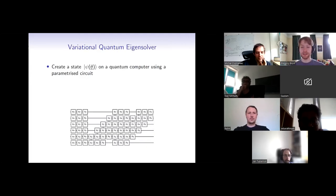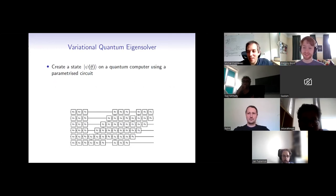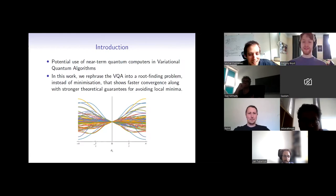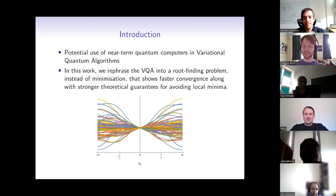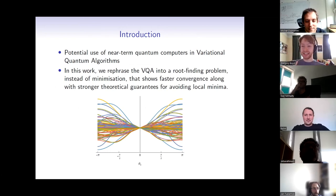In this talk, I'm going to rephrase the variational quantum algorithm into a root finding problem rather than an energy minimization problem. This has several advantages in that it can show faster convergence, along with stronger theoretical guarantees for local minima and some resilience to noise. Here is real data of a joint root of multiple functions that corresponds to an eigenstate of a Hamiltonian. The scheme involves finding joint roots of many functions, and this is one such slice through a landscape of functions showing one of these joint roots.